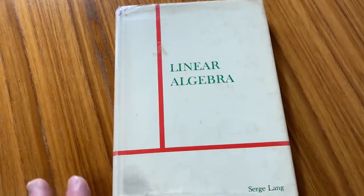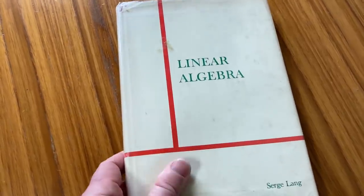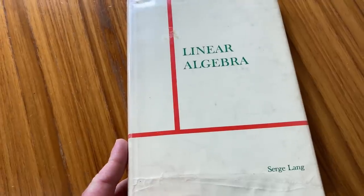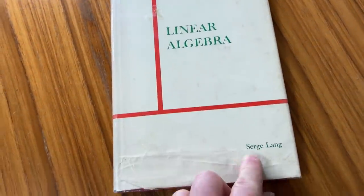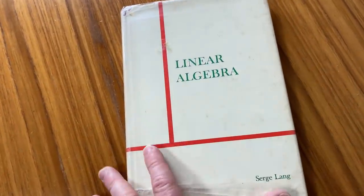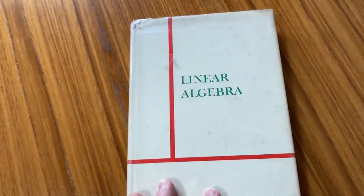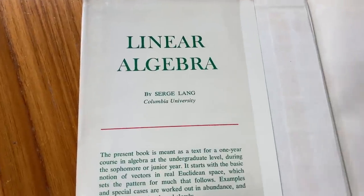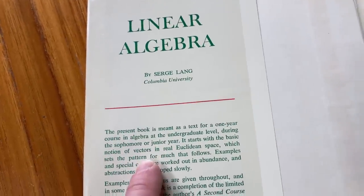This is the first book that I think is really good for just reading. Now for a book like this, you'll want to have a paper and pencil and work through it and try to understand the examples. So this is an older book called Linear Algebra, and it's by Serge Lang. Serge Lang was a very famous mathematician who passed away a long time ago. Here's the inside of the book: Linear Algebra by Serge Lang, Columbia University.